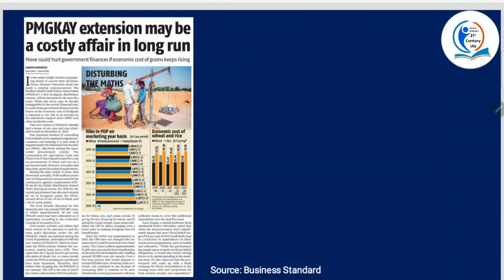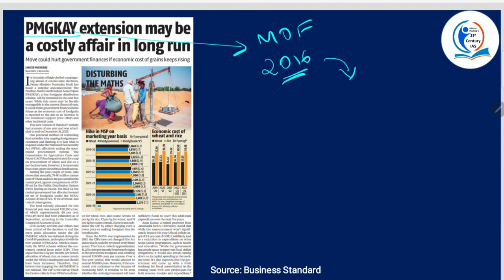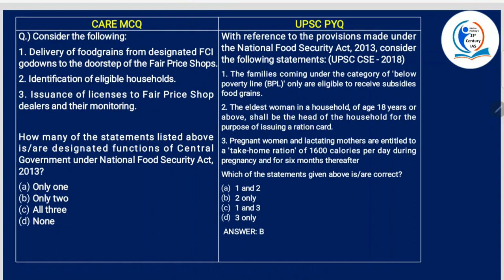Next article: PMGKY — Pradhan Mantri Garib Kalyan Yojana. Some basics: it is under the Ministry of Finance. It came into being in 2016 and was extended during the pandemic to support economically affected people. These are some basics — now we'll get into the MCQ.